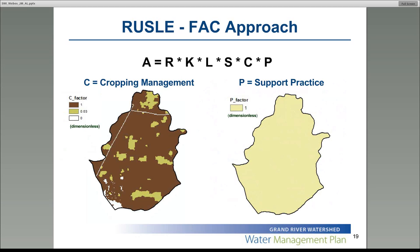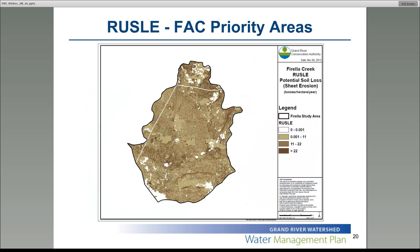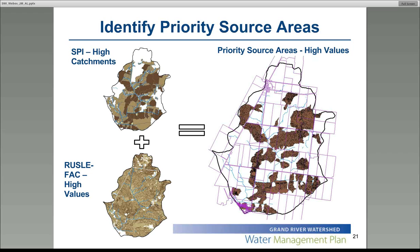The fifth factor is the crop management factor, the C factor. We used a value of 1 for agricultural lands and 0.03 for permanent natural cover such as woodlots or natural areas. The last factor is the P factor, which is support practice. Due to limited spatial data on this factor, we assigned a value of 1 for the whole study area. Once we had all six factors created, we multiplied them together in ArcGIS to create one final raster output. We classified it into high, medium, and low — high is the dark brown areas and low is the lighter brown areas. For this project, we focused on just the high areas: the high SPI catchments and the high values of the RUSLE-FACT. Together, those were used to identify priority areas in Forella Creek, with the goal for these outputs to be used by our resource and conservation staff to target agricultural best management practices.